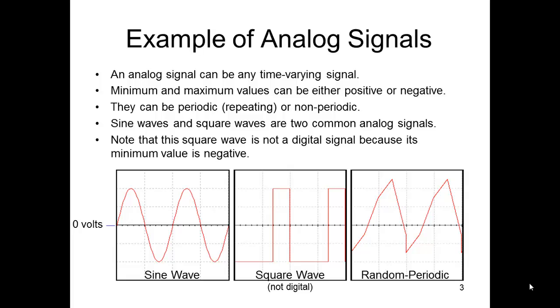Alright, analog signals. It's any time varying signal. The maximum and minimums could be positive or negative, or they could be zero. They could be periodic, meaning they have the same pattern over and over repeating, or non-periodic.